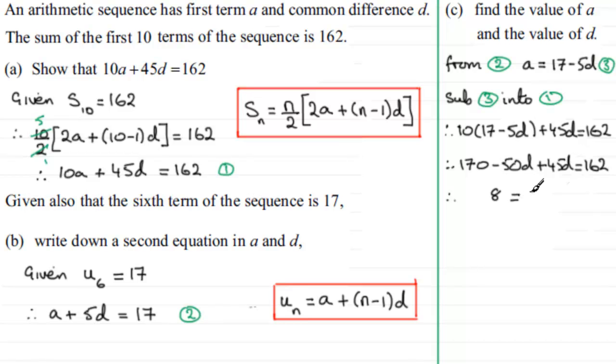Add it to both sides. And I've got 8 equals 5D. Divide both sides now by 5. And D is 8 fifths or 1.6. I'll give both values there. 8 fifths or 1.6. So that's one answer then.